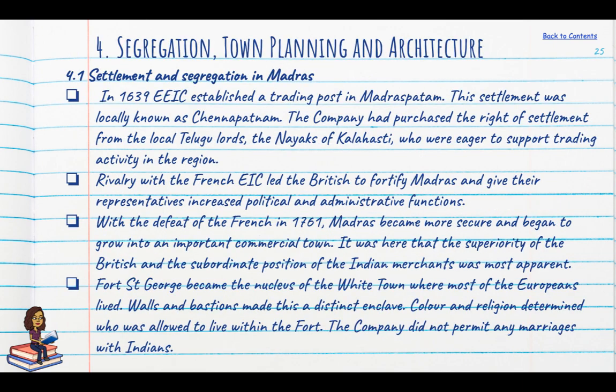Now let us turn to the case study of Madras, which represented the segregation of the British and the Indian — a pattern that was replicated in Bombay and Calcutta as well. In 1639, the East India Company established a trading post in Madrasapatam, locally known as Chennapatnam — which is why when they changed the name, it became Chennai. The company purchased the right of settlement from the local Telugu lord, the Nayaks of Kalahasti, who were eager to support trading activity. Because of a long-standing rivalry with the French East India Company, the British needed to fortify Madras, and thus Fort St. George came up.